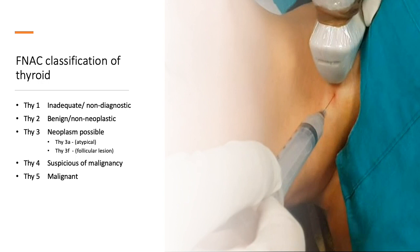The Royal College of Pathologists recommends the FNAC classification from Thy1 to Thy5. Thy1 is inadequate or non-diagnostic; Thy2 is benign or non-neoplastic; Thy3 is neoplasm possible, with two variants — Thy3a (atypical) or Thy3f (follicular lesion); Thy4 is suspicious of malignancy; and Thy5 is malignant.